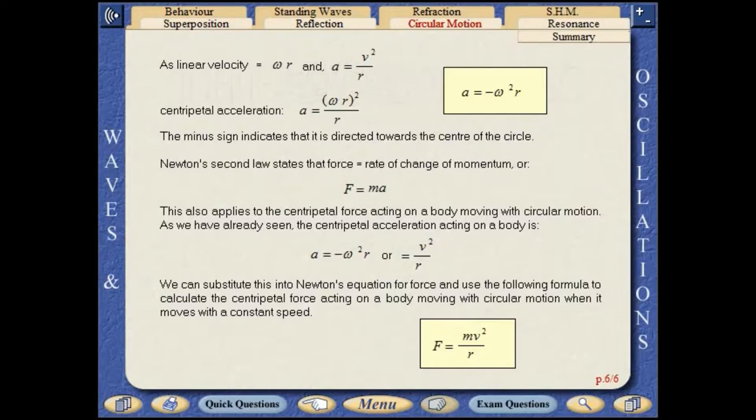We can substitute this into Newton's equation for force and use the following formula to calculate the centripetal force acting on a body moving with circular motion when it moves with a constant speed: f equals mv squared over r.